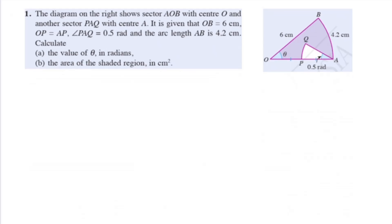The diagram shows a sector AOB with center O and another sector PA with center A. It is given that OP is 6 cm, OP equals AP, angle PA is 0.5 radians, and the arc length is 4.2. Calculate the angle theta. We already know the length of this arc and the radius of the bigger sector which is 6 cm.